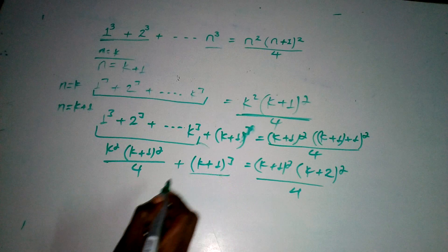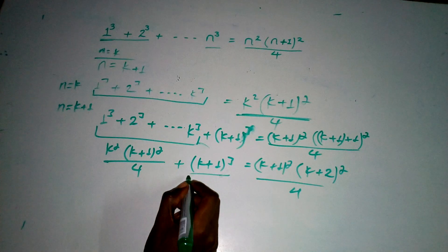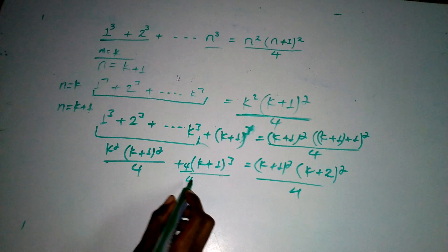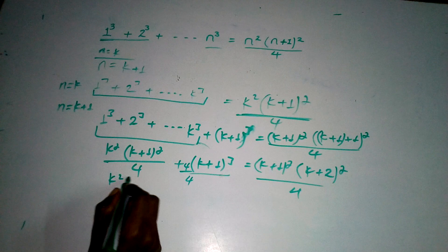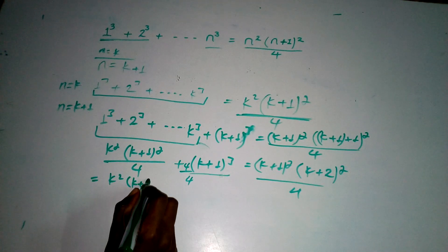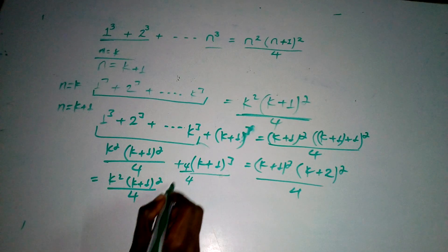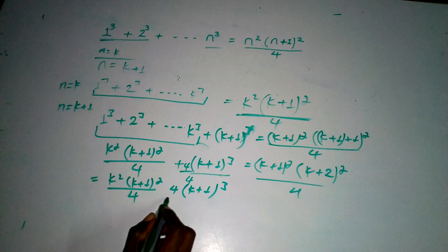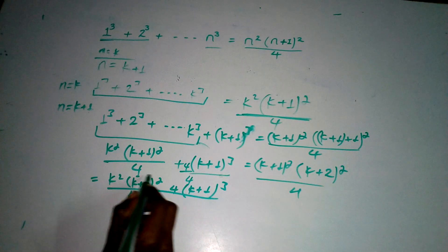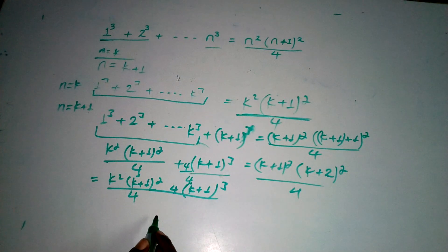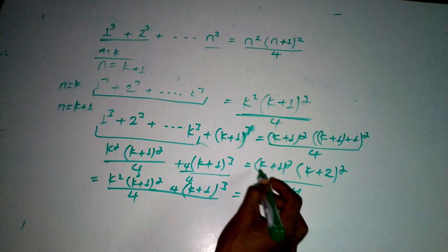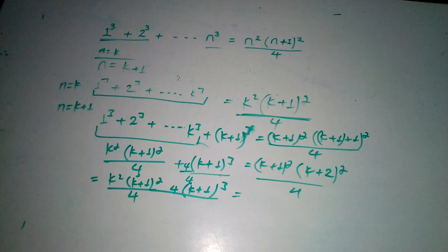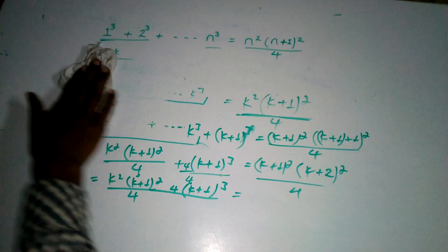This equals k square in the bracket k plus 1 the world square over 4 plus in the bracket k plus 1 the power of 3. We need to combine these two fractions to make it equal to the right side.